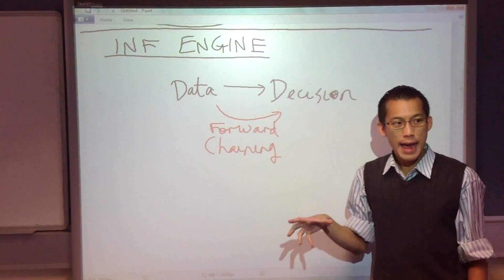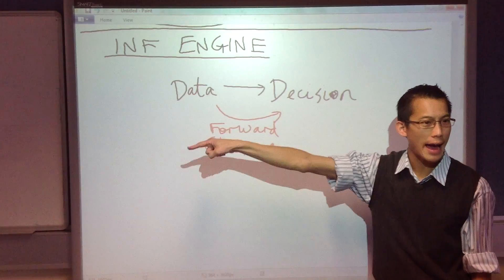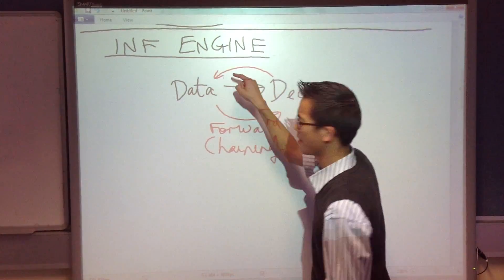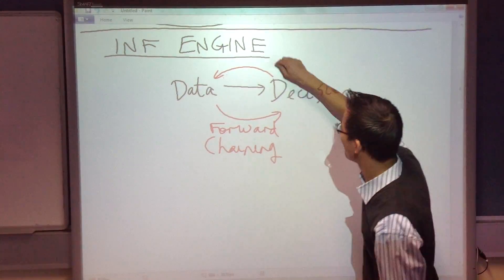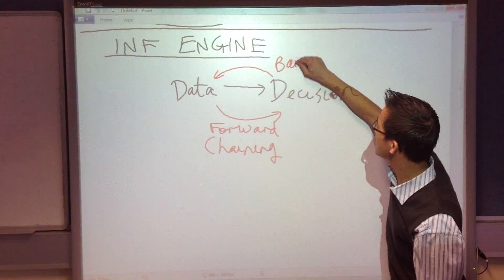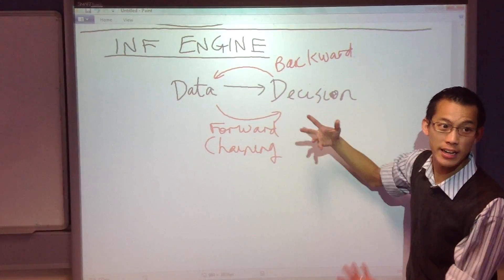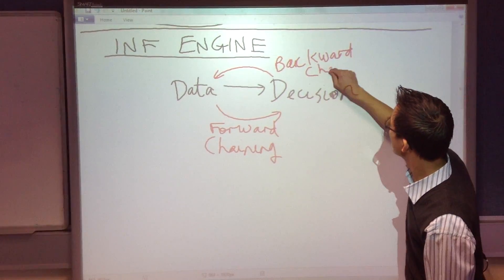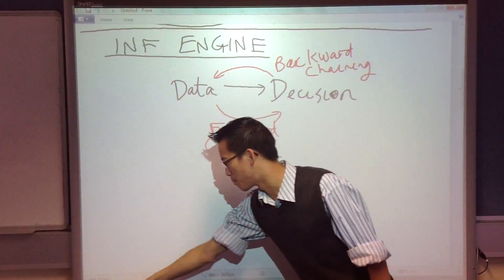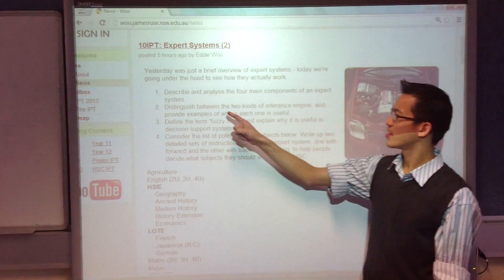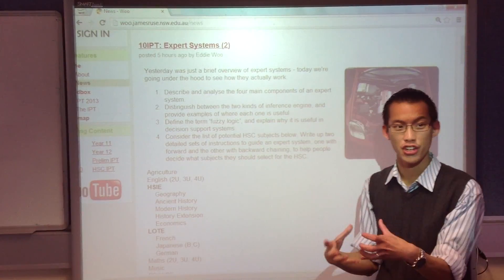Now you may, or the system may, start from a decision and go back towards data. That might seem a bit backwards to you, which is why it's called backward chain. But as you'll see in a minute, as humans we use both of these on a regular basis all the time. Sometimes one is useful, sometimes the other is useful, and sometimes a combination of both.